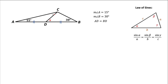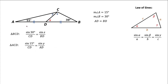Let's call the angles at the top as Y and Z. Now we're going to apply the law of sines first to triangle CDB. We take sine of 30 degrees divided by CD, the opposite side, equals sine of angle D divided by side BD. Now applying the law of sines to triangle ACD, we get sine of 15 degrees divided by the opposite side CD, equals sine of Y divided by the opposite side AD.